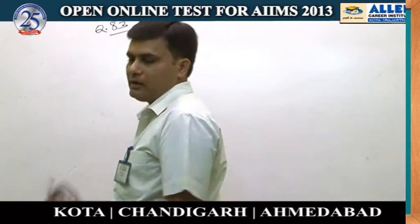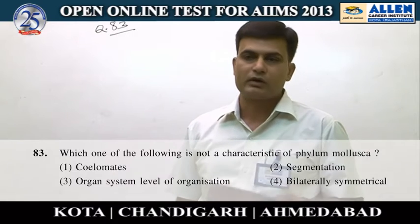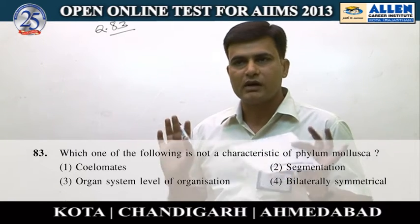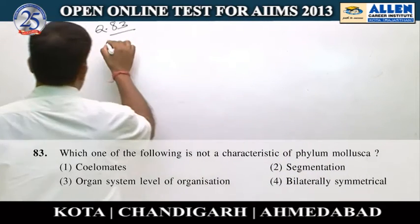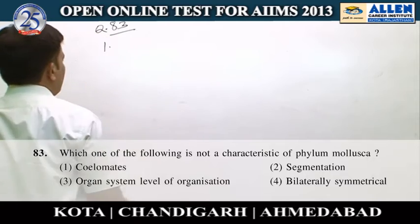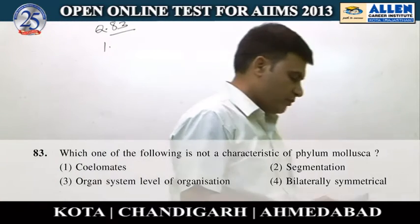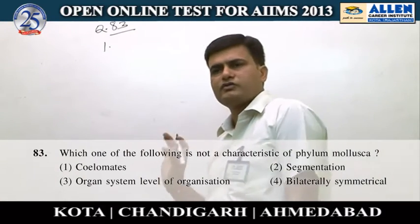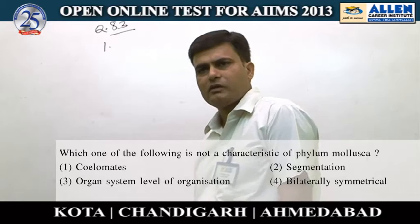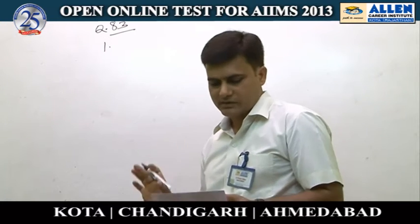Question number 83: which one of the following is not a characteristic of phylum Mollusca? Option one is coelomate — this is the wrong answer, because phylum Annelida to Chordata are coelomates, and therefore phylum Mollusca is also coelomate.